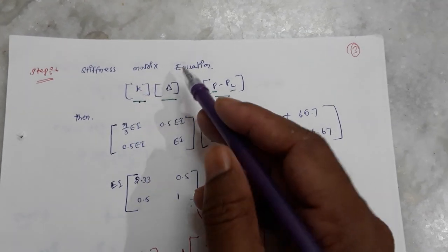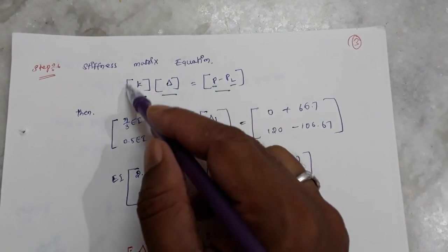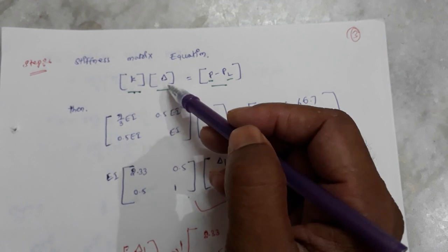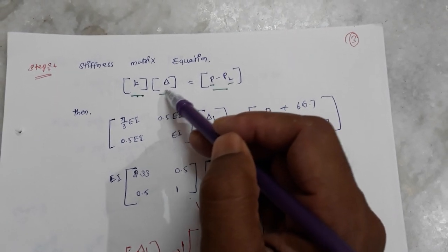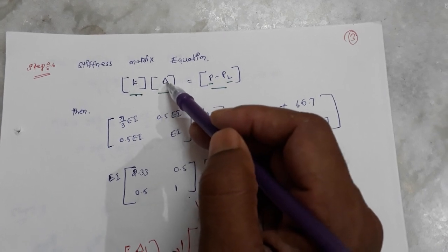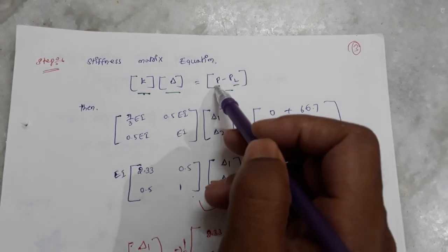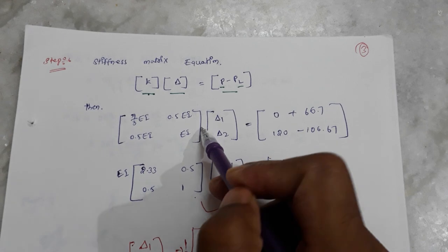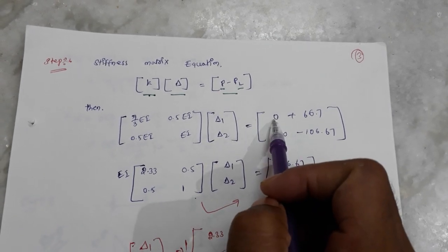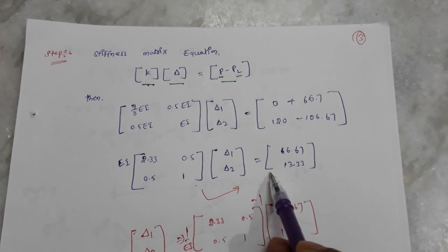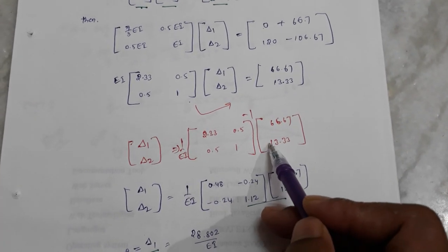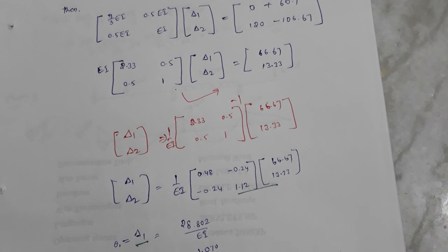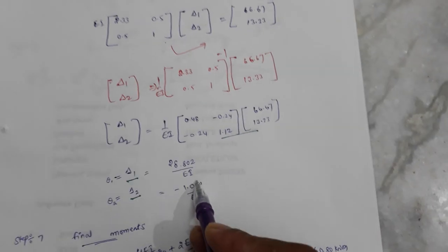We form the stiffness equation: K · delta = P minus P-fixed. We know K and we know P minus P-fixed, so we need to find the unknown displacements delta. To solve for delta, we take the inverse of the K matrix using the formula involving A·D minus B·C. We then obtain delta-1 and delta-2, which are the angular displacements theta-b and theta-c.